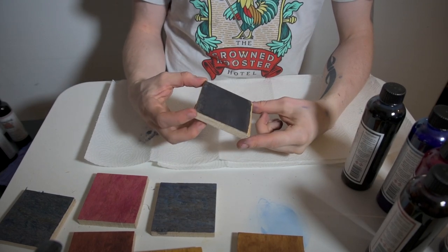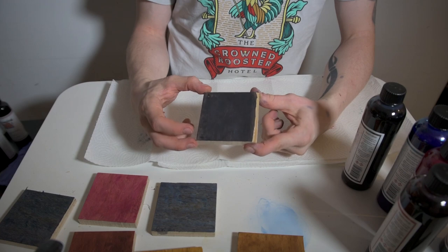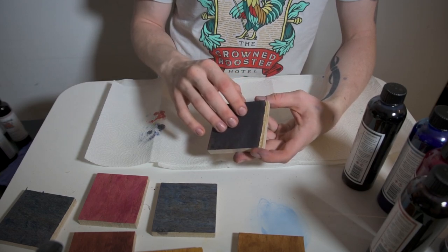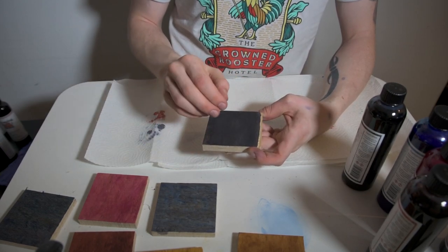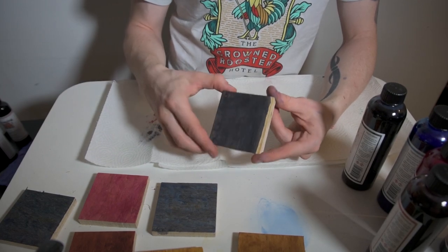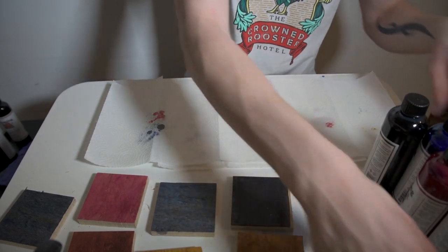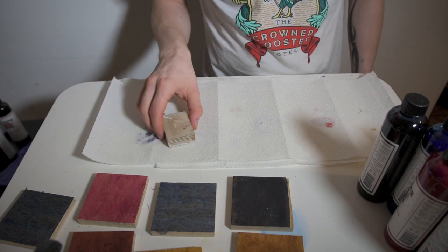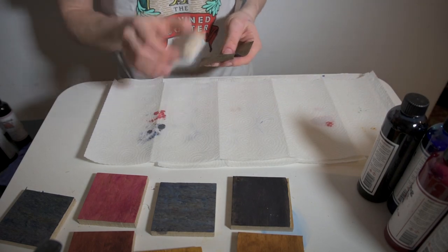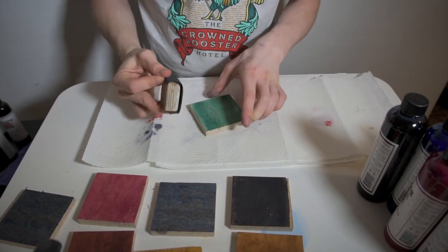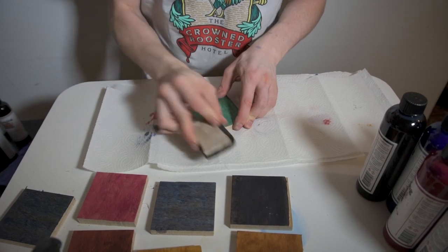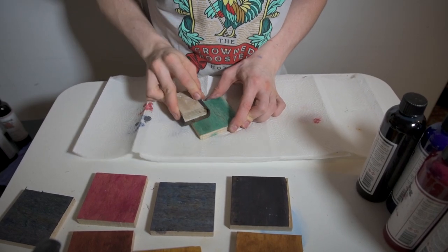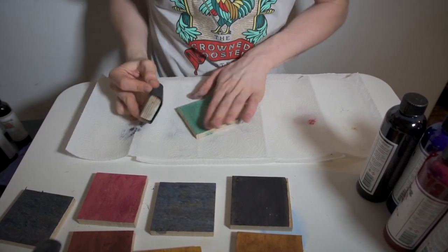The really nice thing about using spirit-based stain is that they off-gas. Instead of water-based, which soaks into the wood and has to dry for much longer, all of the spirits evaporate, so you can sand these much quicker. I've cut out a piece of 320 for myself. The point is you don't sand away all the material because that would defeat the whole purpose, but leave it in the grain of the wood.